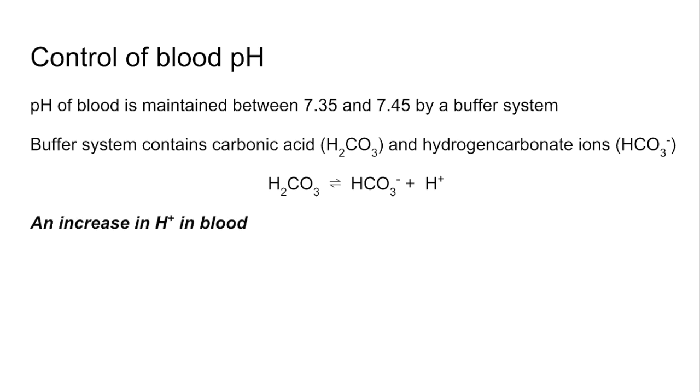If there was an increase in H plus ions in the blood, the blood's becoming too acidic, the pH is dropping, then the extra H plus ions combined with the hydrogen carbonate ions send the equilibrium over to the left. To prevent a buildup of carbonic acid in the blood that would then dissociate into water and carbon dioxide and you would breathe that out.